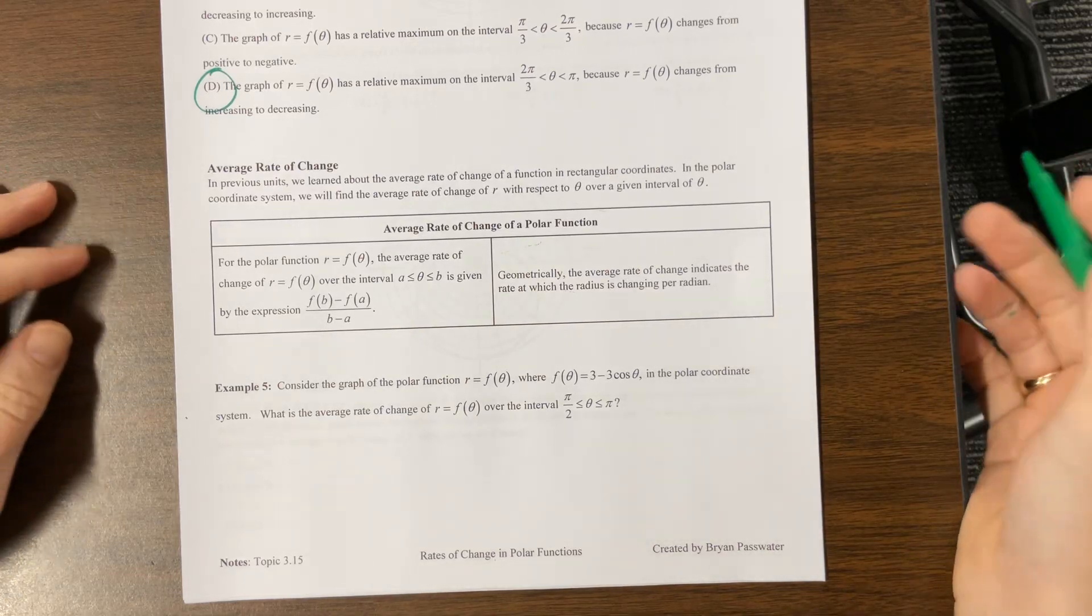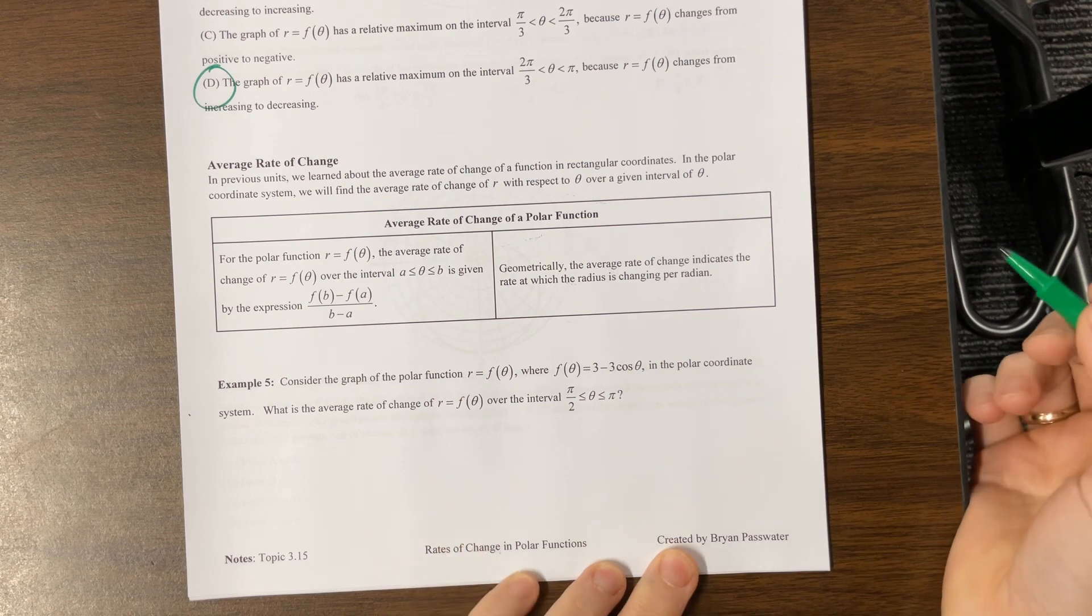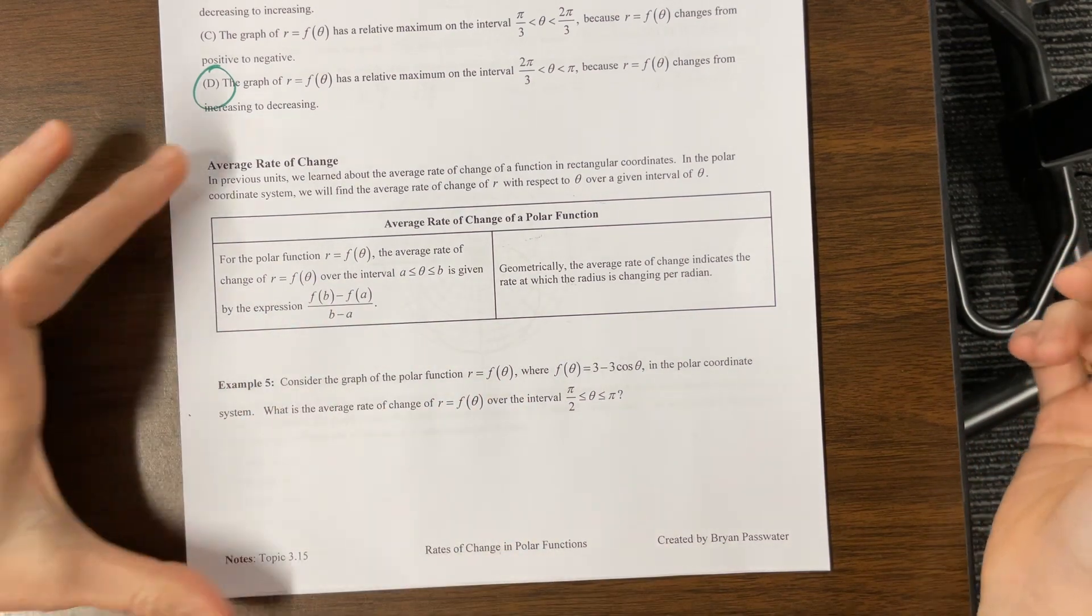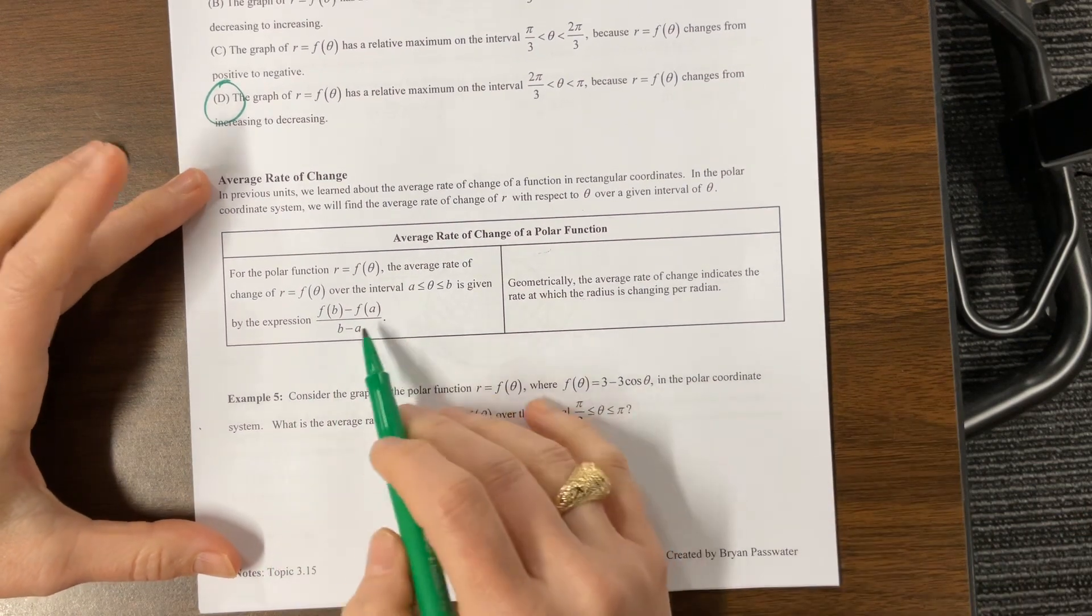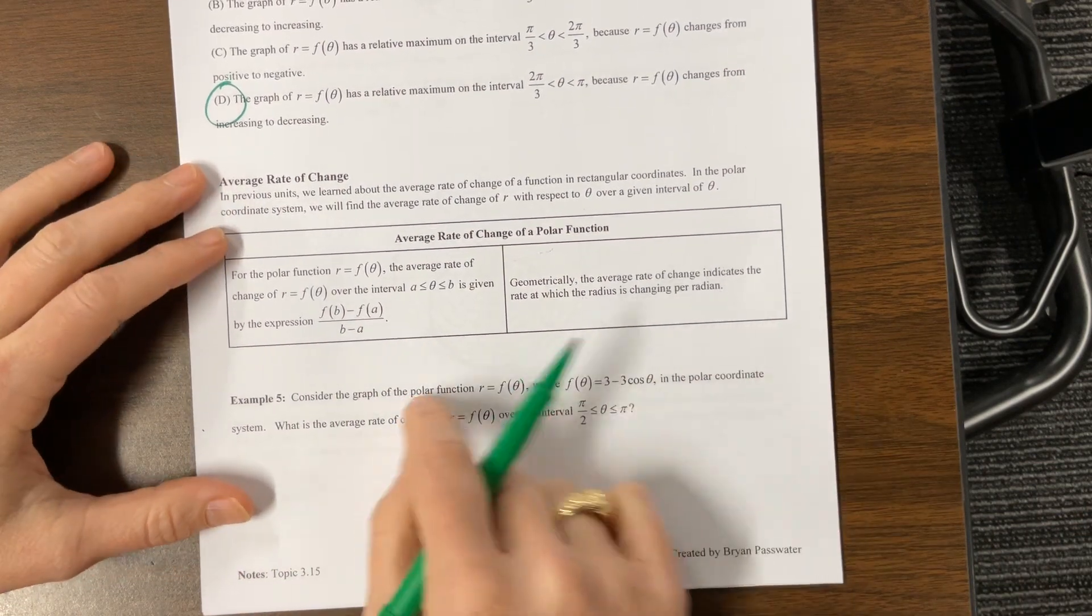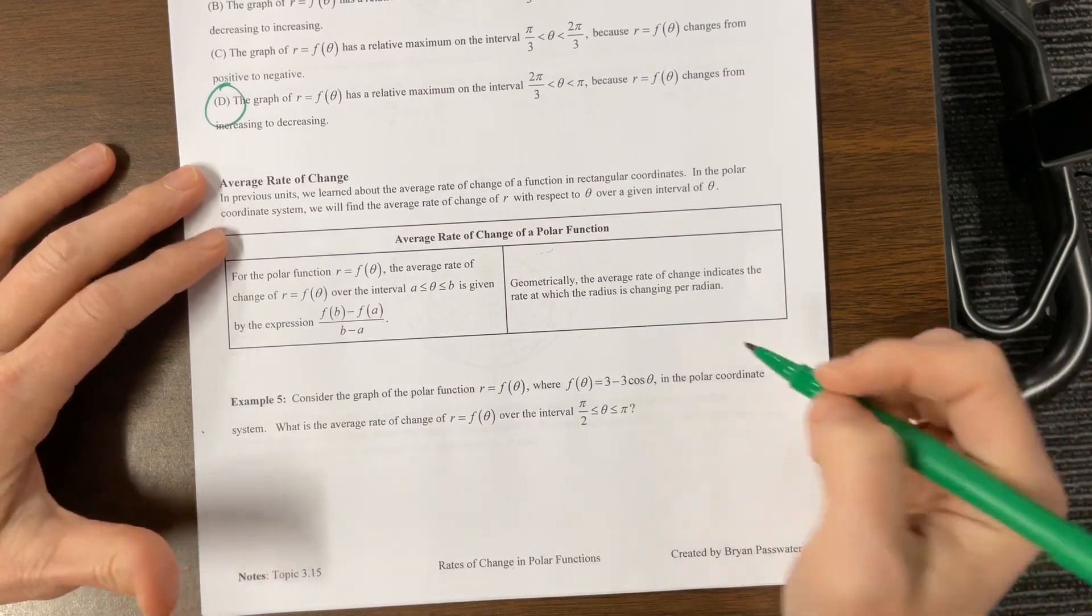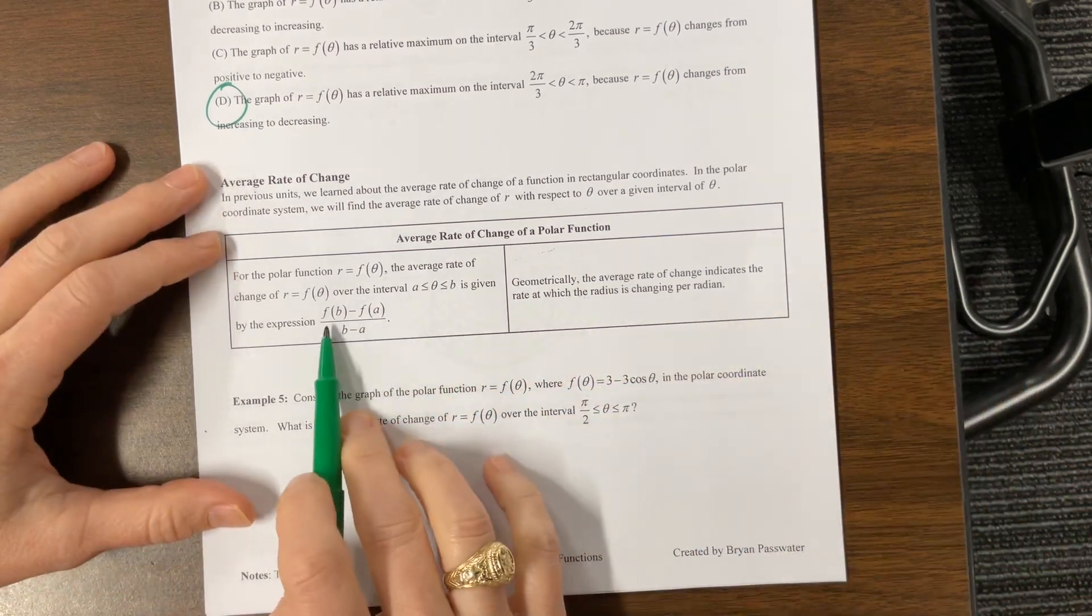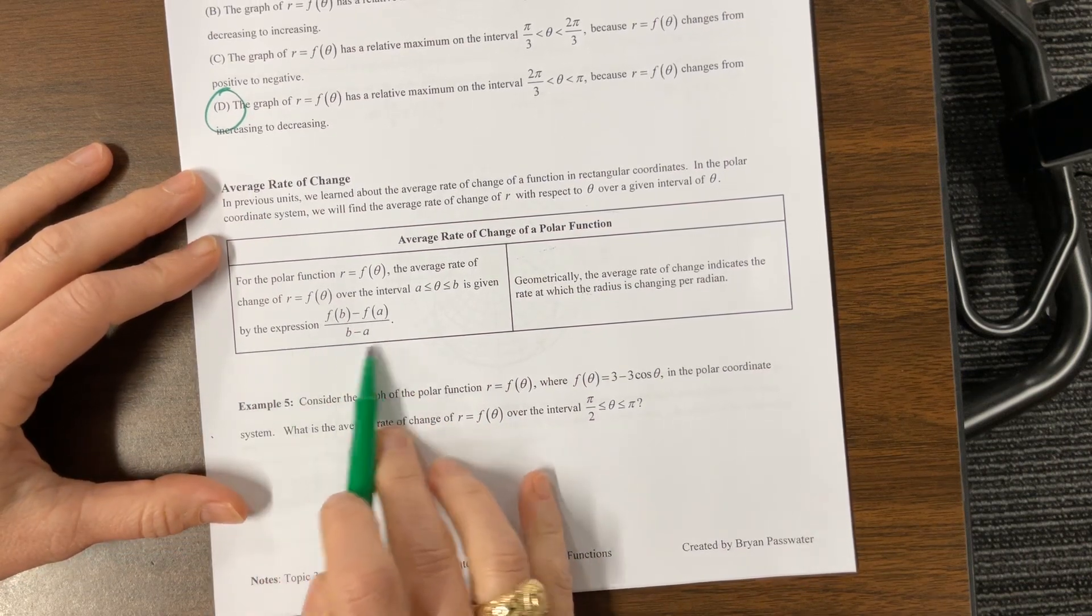Howdy, it's Ms. Kosh. I am continuing with Mr. Passwater's 315 notes, and now we're getting to average rate of change. We learned in the past that the average rate of change is the change in output values over the change in input. We may think rise over run, change in y over change in x, but a nice way to think about it is the change in the output divided by the change in the input.